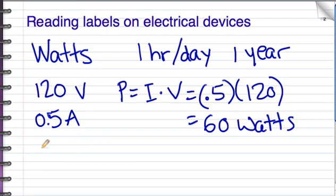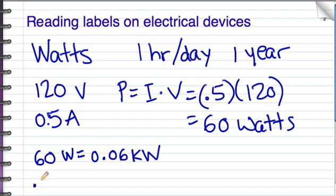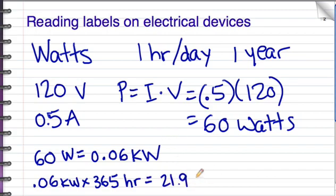First of all, we have to convert watts to kilowatts. 60 watts is equal to .06 kilowatts. To convert from watts to kilowatts, you divide by 1,000. We must multiply that by the number of hours. Well, if we're using it for one hour a day for one year, that's 365 hours. So .06 kilowatts times 365 hours equals 21.9 kilowatt hours.